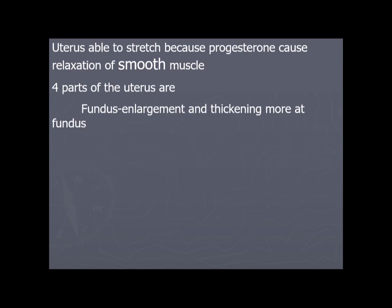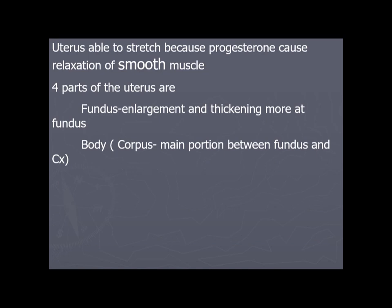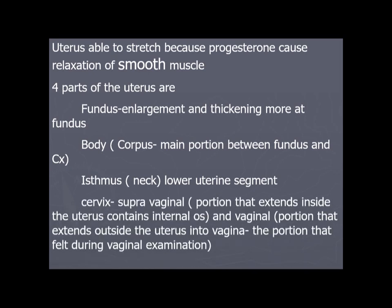The fundus shows the most enlargement and thickening. The body (corpus) is the main portion between the fundus and the cervix. The lower uterine segment is the neck area, and the cervix is the supravaginal portion — the part that extends inside the uterus, containing the internal os and vagina.